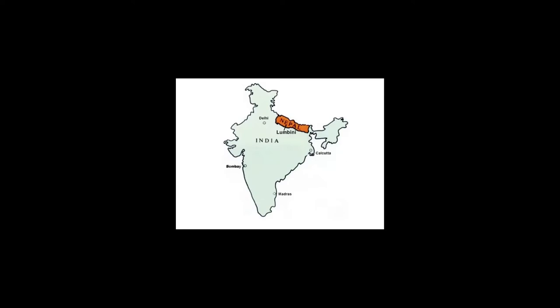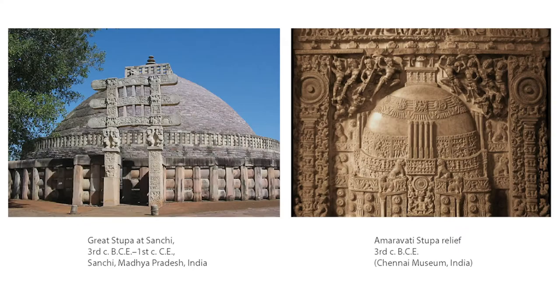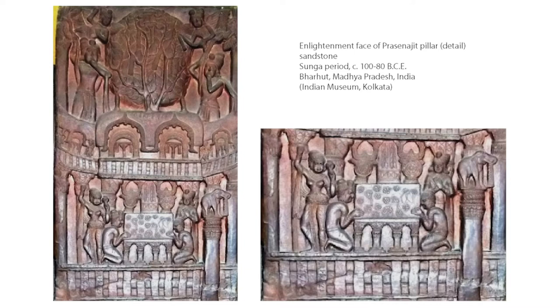It all began with the Buddha who was a historic figure who lived in the sixth century BCE. He was born into a royal family and was a prince from the Himalayan Kingdom in what is now Nepal. The earliest extant Buddhist art does not depict the Buddha — rather it alludes to him or literally embodies him. A stupa is a dome-shaped monument which originally was thought to contain the ashes of the Buddha because he had been cremated, and later these stupas became pilgrimage sites.